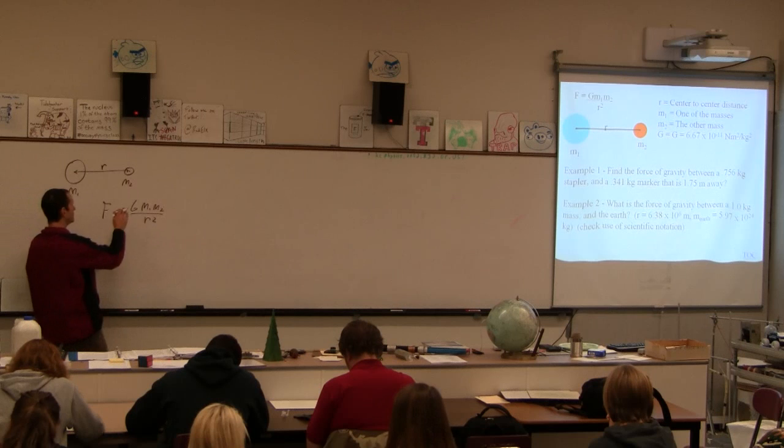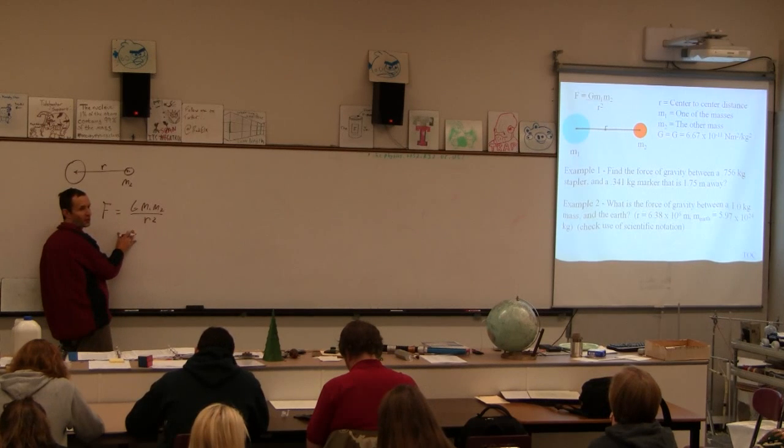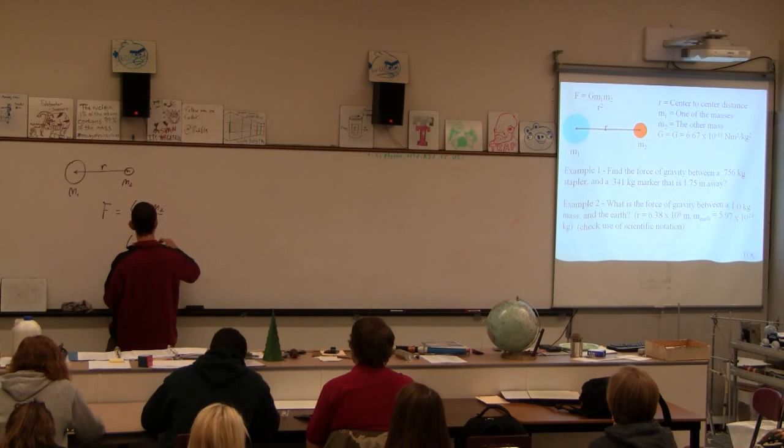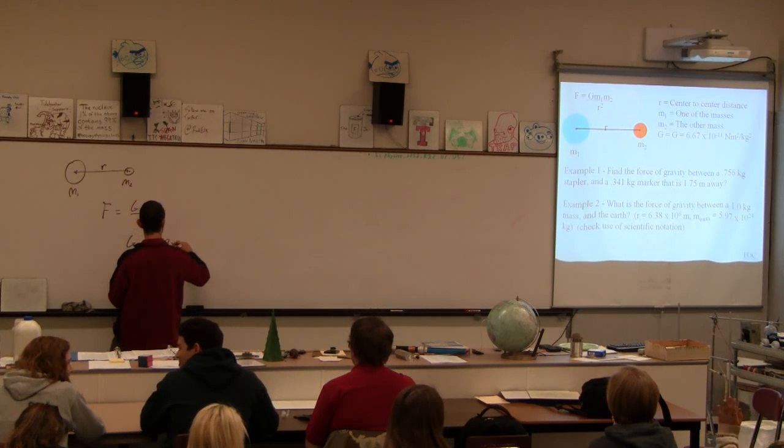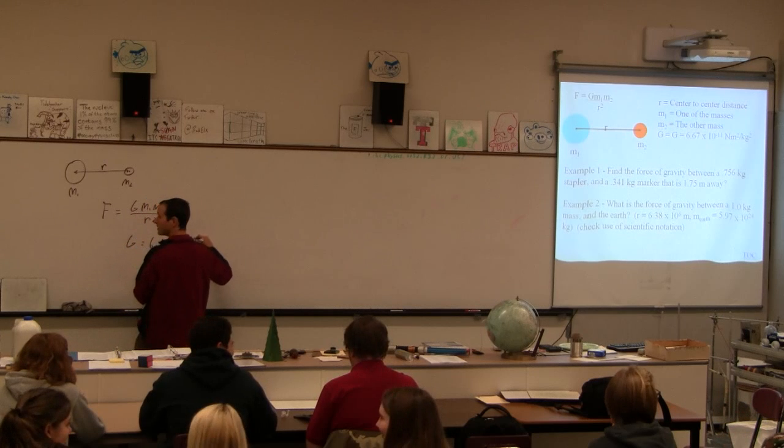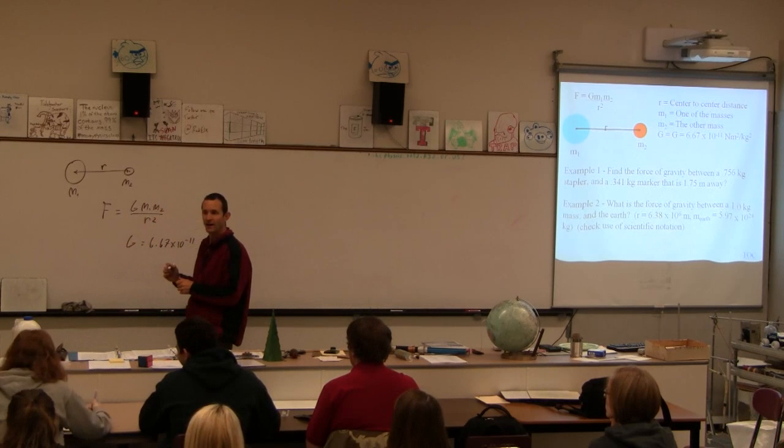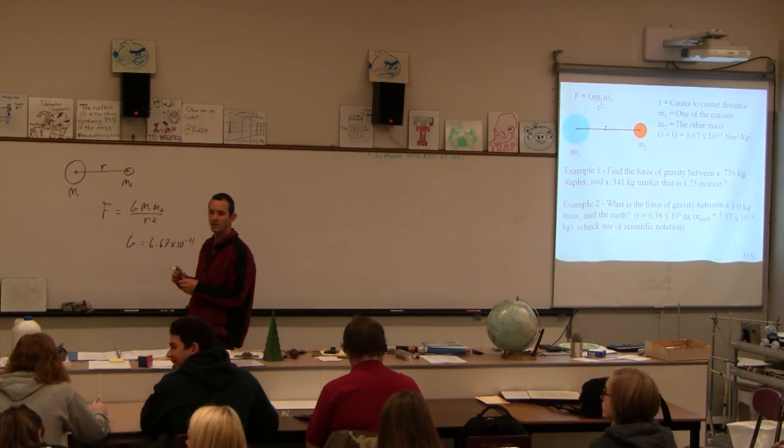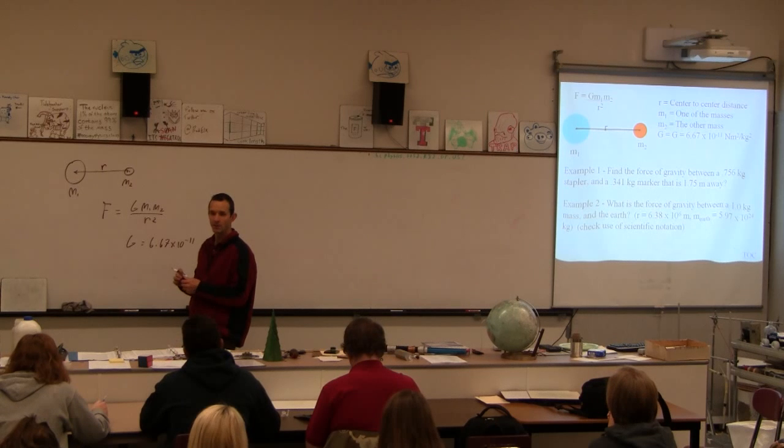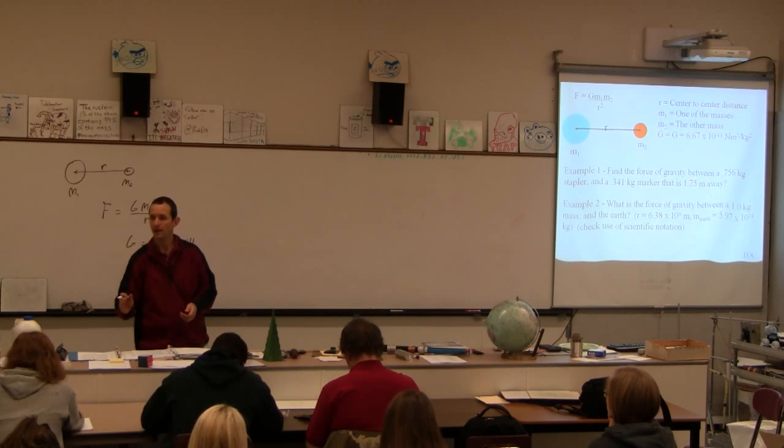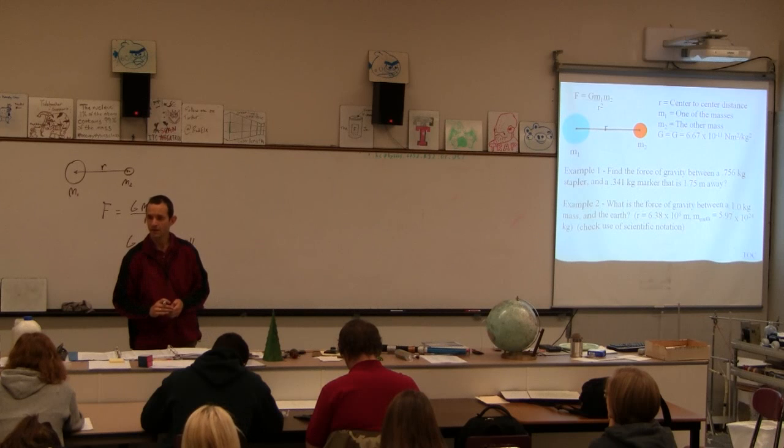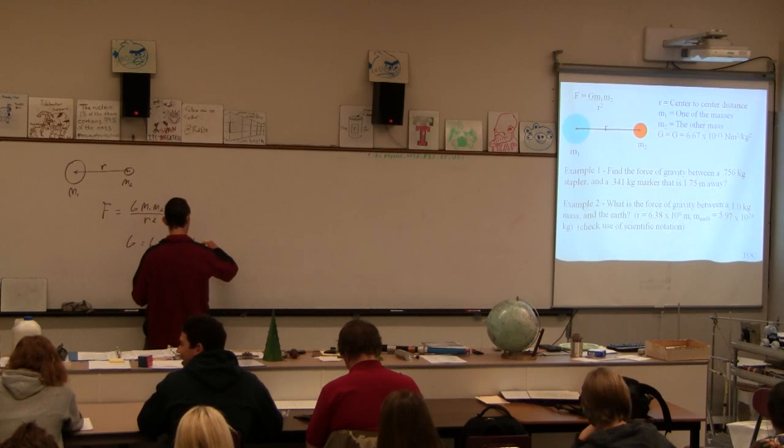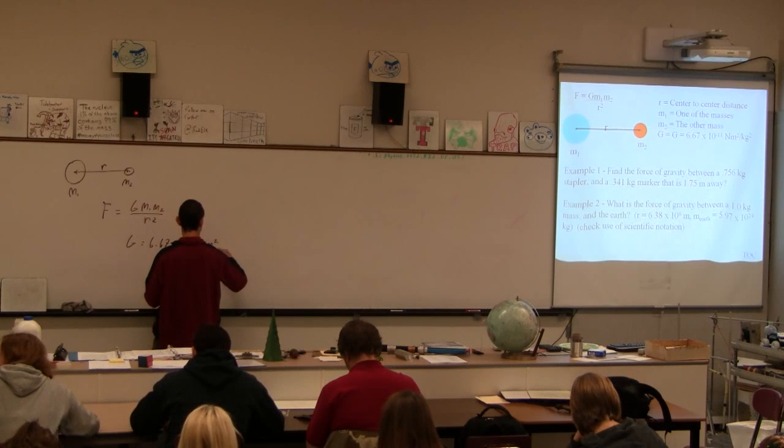Now, that constant, we had, by the way, Newton had this formula a long time before we knew what that constant was, and then somebody named Henry Cavendish figured out that this constant was 6.67. Henry, did I say Henry Cavendish? So what about that? In Cloud Atlas, the book we just read in English, one of the characters' name is Timothy Cavendish. That's Henry's brother. No, I don't know.